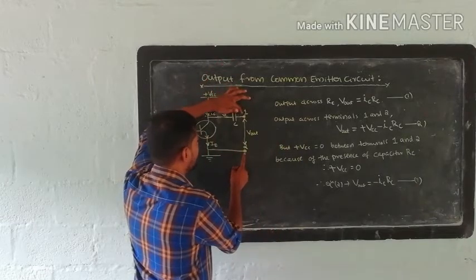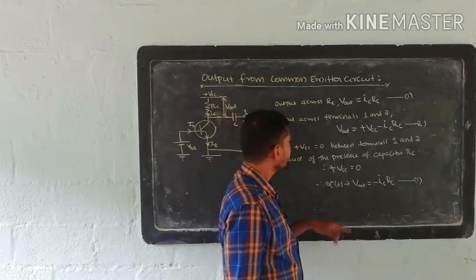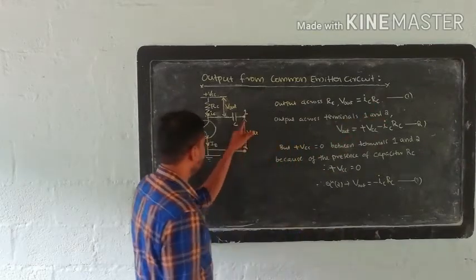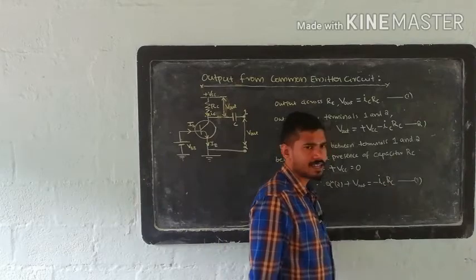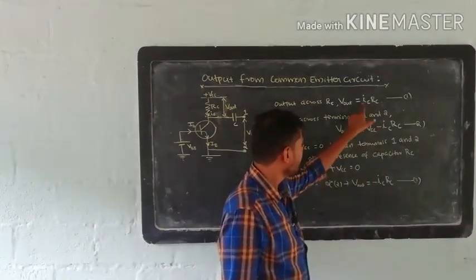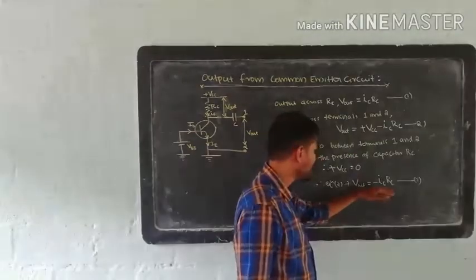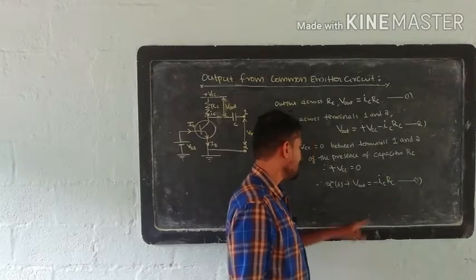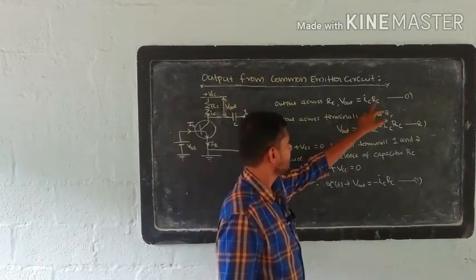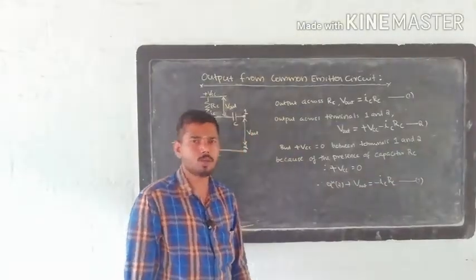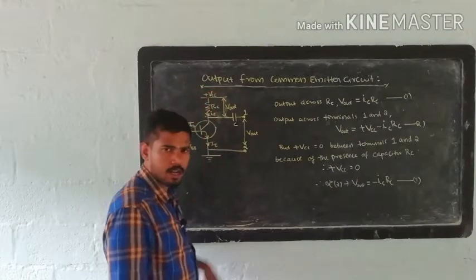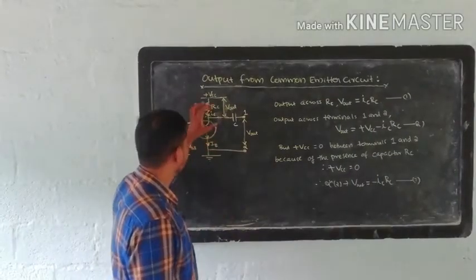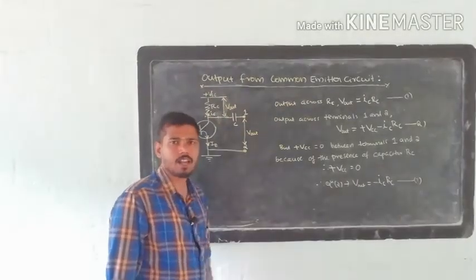That is the voltage across terminals 1 and 2. The voltage is minus IcRc. When our output is minus IcRc, it is equal in magnitude but there is a phase reversal. This is the phase reversal. The output voltage is minus IcRc — the ICRC phase is reversed. In the common emitter transistor circuit, phase reversal will occur.